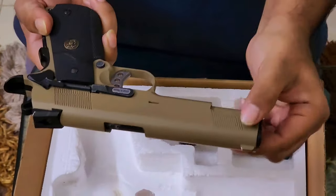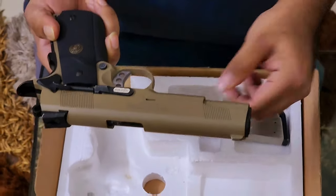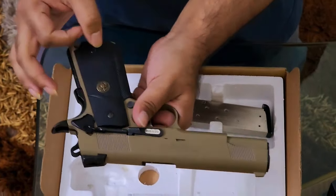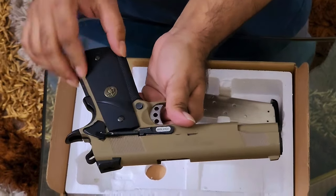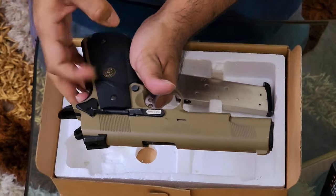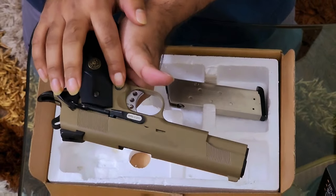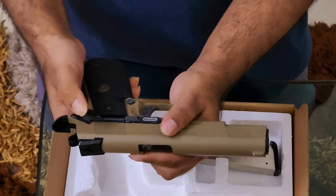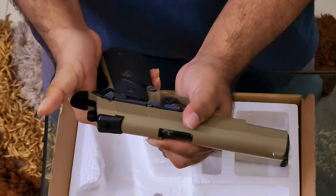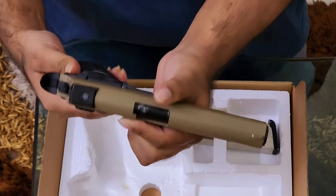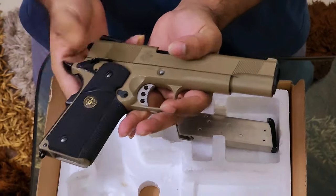This is a full metal gun, but everything is metal except this section. This is rubberized polymer. The magazine release and trigger are metal, slide lock metal, hammer metal. Now the beaver tail and thumb safety are polymer.